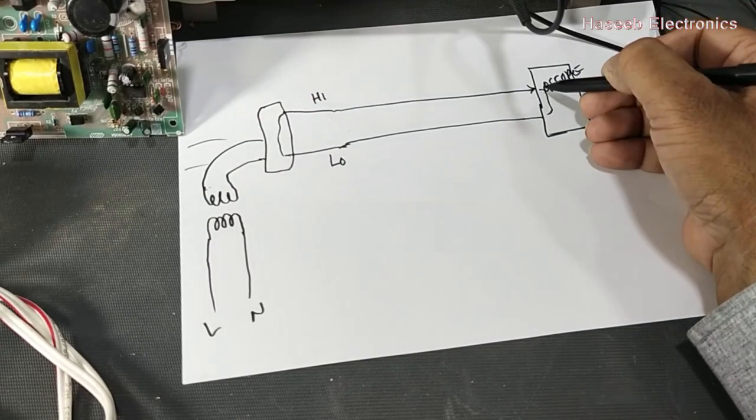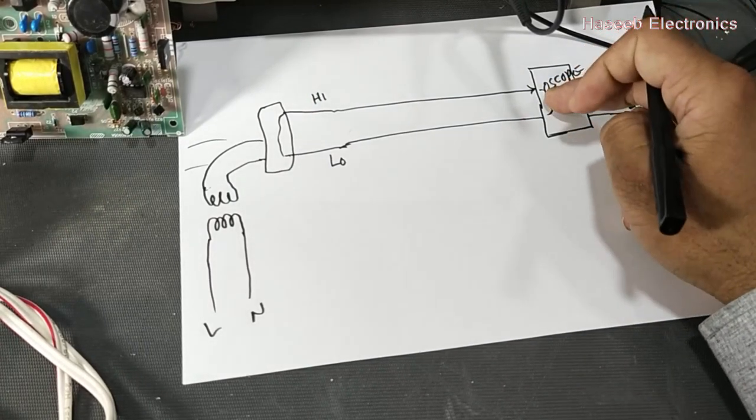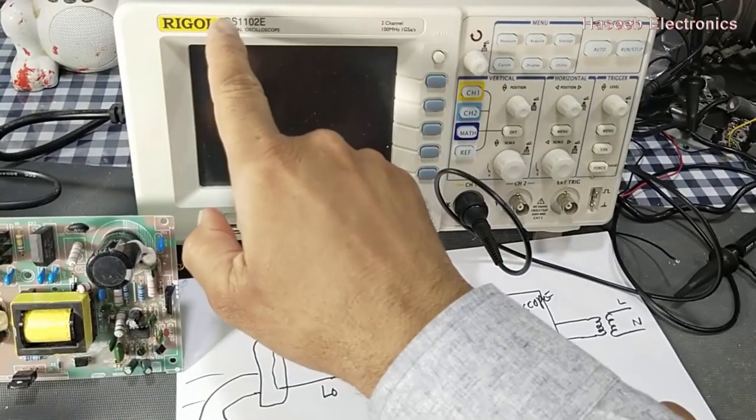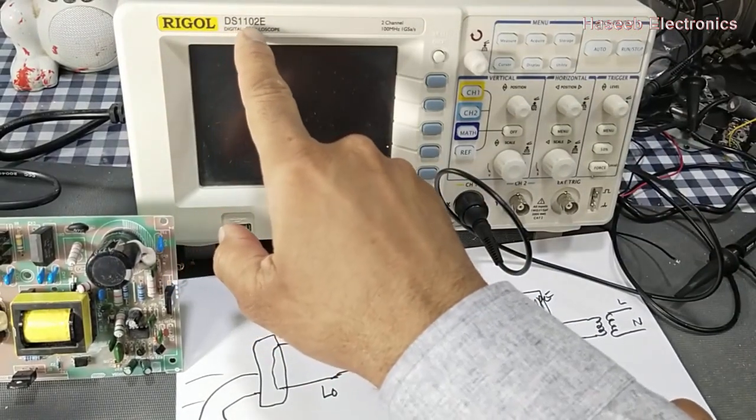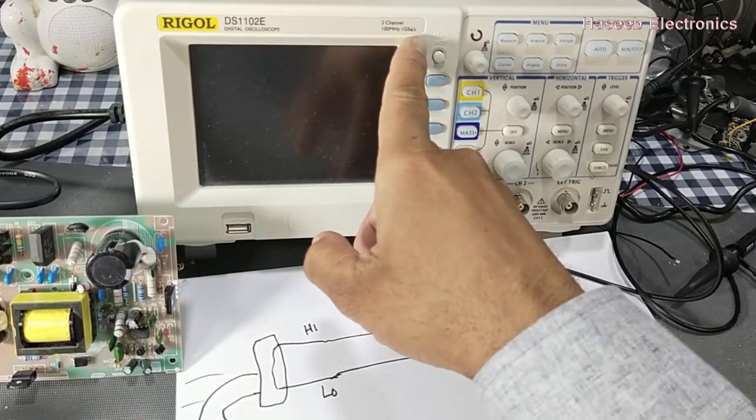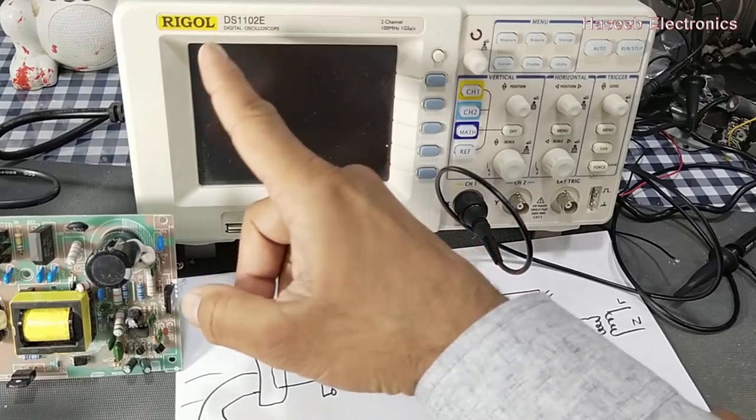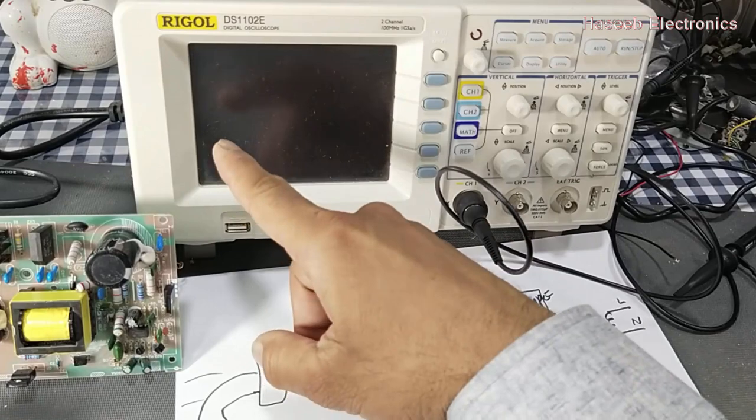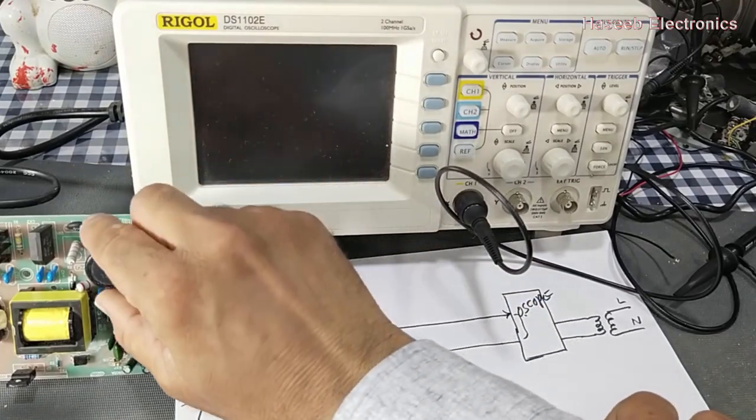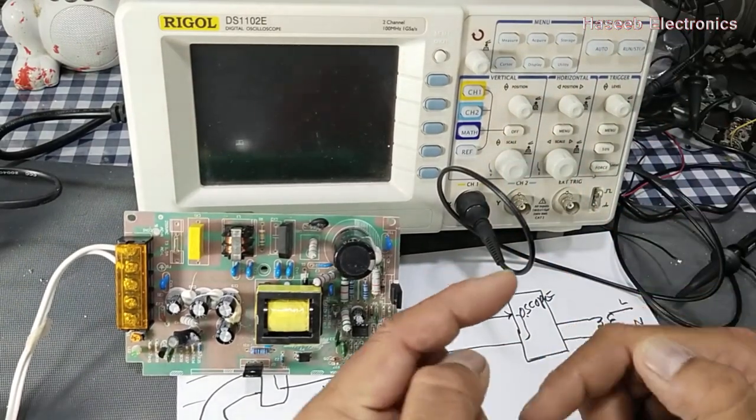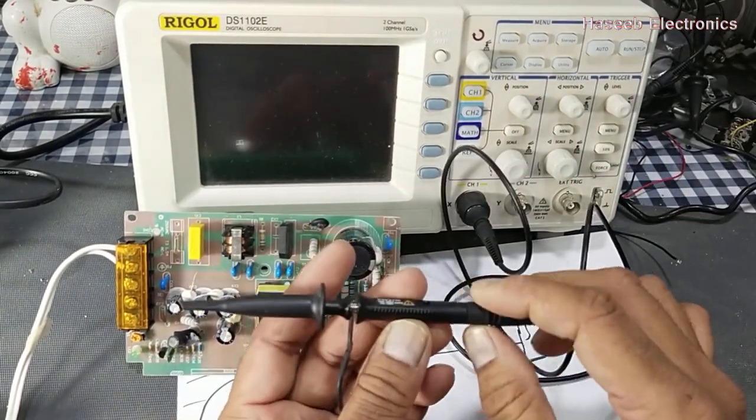This time I am using a Rigol DS1102E 2-channel 100 megahertz 1 gigasample per second. I also have a Hantek 2-channel and a 4-channel Tektronix oscilloscope. You can use any oscilloscope, but the test pattern and procedure will remain the same.